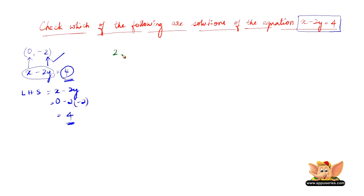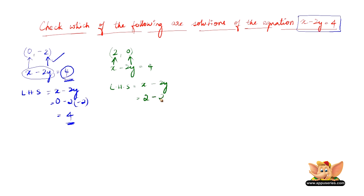Let us consider another candidate, (2, 0), and check if the left hand side equals the right hand side when substituted. LHS equals x minus 2y, so we substitute x as 2 and y as 0, giving us 2 minus 2 into 0, which is 2 minus 0, equals 2. This is not equal to the right hand side, which is 4. Therefore (2, 0) is not a solution of x minus 2y equals 4.